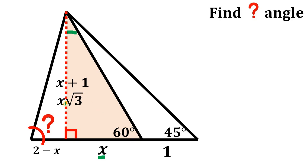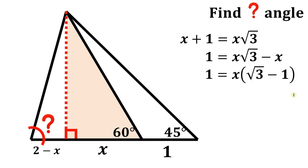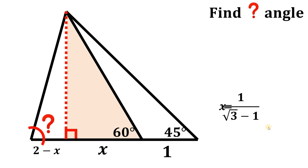Using the property of the 30-60-90 right triangle, what can we say about x plus 1 and x times square root of 3? Obviously, they are just the same thing because they represent the same length as this red segment. So we can say that x plus 1 equals x times square root of 3. Now we can solve for x: combine terms, subtract x on both sides, factor out x, and divide both sides by square root of 3 minus 1.